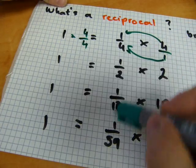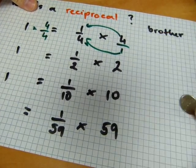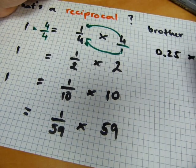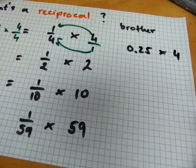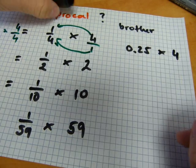It works with decimals, not only with fractions. So I could have written, instead of one over four, I could have written point twenty-five and four. Those are reciprocals. Or point five and two. It's the same thing.